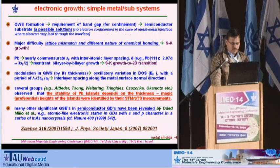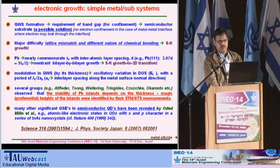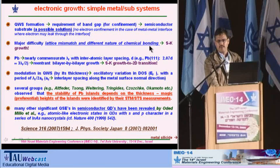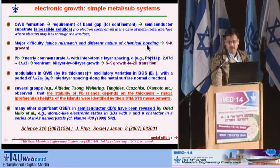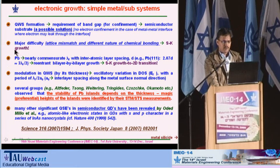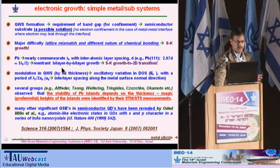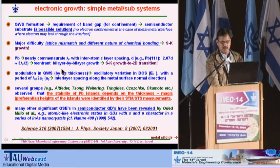For electronic growth we need a bandgap, and that's why a semiconductor may be a possible solution. However, even with semiconductors we have a major difficulty: lattice mismatch and different nature of chemical bonding, which makes it very difficult to deposit a large area of flat film. Even so, people have tried simple metals like lead, which has four times higher Fermi wavelength than the d-spacing, so even one atomic layer change in thickness can produce a very significant change in electronic states.